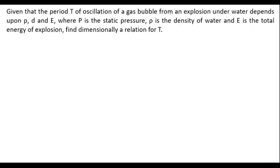How can you break down this question which reads: given that the period T of oscillation of a gas bubble from an explosion underwater depends on P, rho, and E, where P is the pressure, rho is the density, and E is the total energy. The first thing we're going to do is find the dimensions for each quantity.